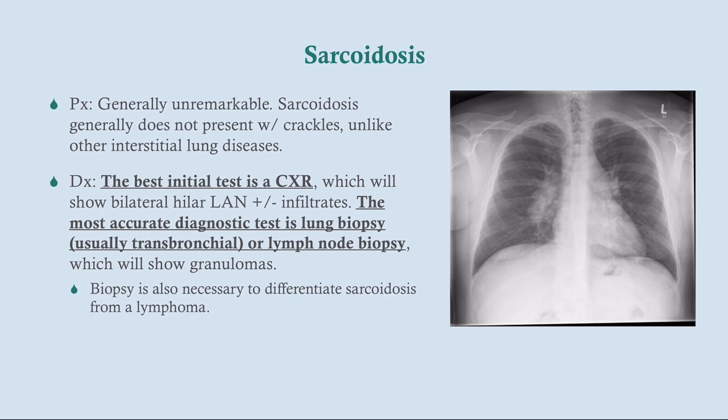For diagnosis, the best initial test is a chest x-ray, which will typically show bilateral hilar lymphadenopathy and possibly pulmonary infiltrates reflecting the interstitial nature of this disease. The most accurate test is a biopsy, which will show granulomas without organisms — unlike tuberculosis. A biopsy is also important to distinguish sarcoidosis from lymphoma, which can also cause hilar lymphadenopathy but will lack the multisystemic and cutaneous manifestations of sarcoidosis.